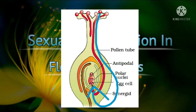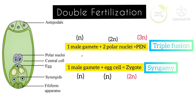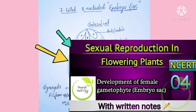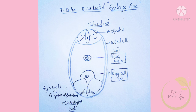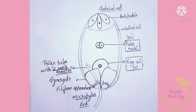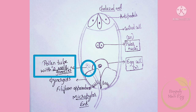Continuing from that process, fertilization occurs. So today's topic is double fertilization. What is double fertilization? Two types of fertilization occur. We already studied the structure and development of the female gametophyte — that is the seven-celled, eight-nucleated embryo sac. Now, in this embryo sac, through pollen-pistil interaction, the pollen tube enters. The pollen tube contains two male gametes.